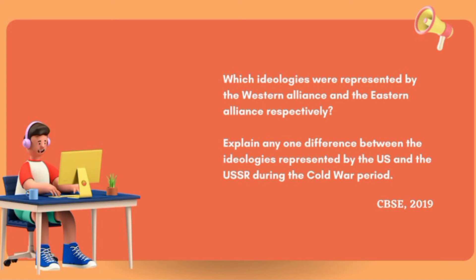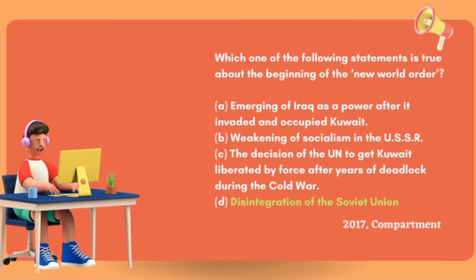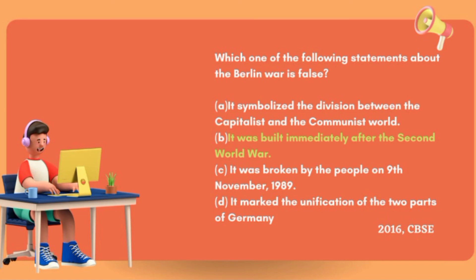A similar question also came in 2019. A question from 2017: which of the following statements is true about the beginning of the New World Order? This term comes in Chapter 3, US Hegemony, which was cut from the syllabus this time. But it means Unipolar World — when the USSR disintegrated, the world became unipolar — so the answer is the disintegration of the Soviet Union. Next question: which of the following statements about the Berlin Wall is false? First statement: it symbolized the division between capitalist and communist — that is correct. Second statement: it was built immediately after the Second World War — that is wrong. So these were some questions covered today.